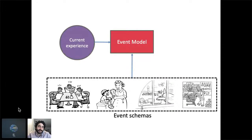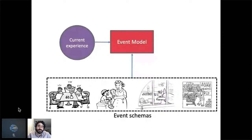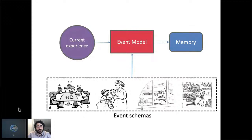The idea is that as we build up models of what's going on in the world around us, this depends not only on what's currently coming in through our sensory system, but also on this big library of schemas we've built up over our lives. Some of these can be related to social situations and particular social interactions in whatever culture you're in. They could also be related to things about temporal dynamics in the world. I'm really interested in how we build up these schemas, how they influence our current understanding of the world, and how these models end up getting stored into long-term memory.